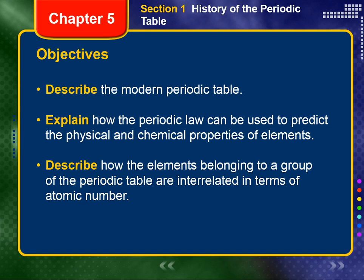At the end of this video, you should be able to describe the modern periodic table, explain how the periodic law can be used to predict the physical and chemical properties of elements, and describe how the elements belonging to a group of the periodic table are related in terms of atomic number.